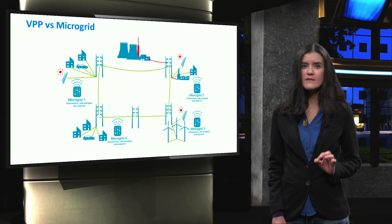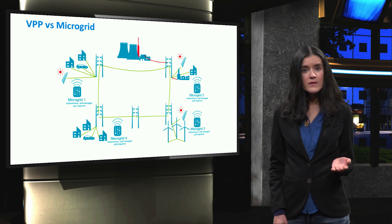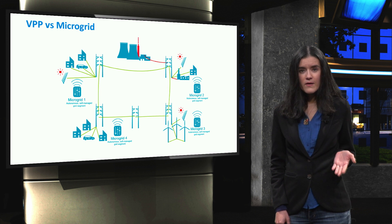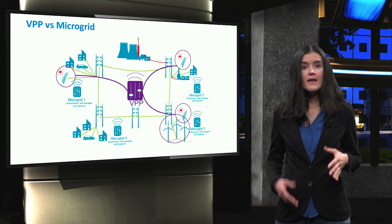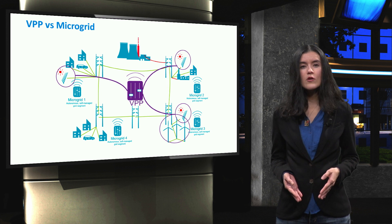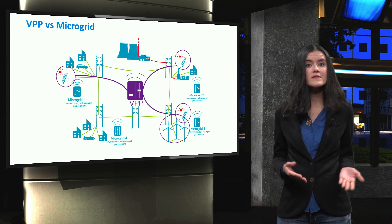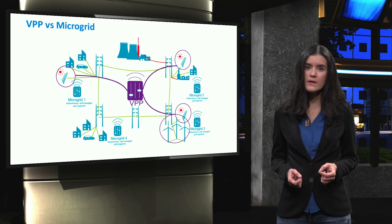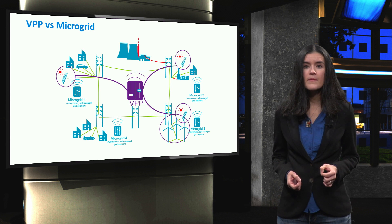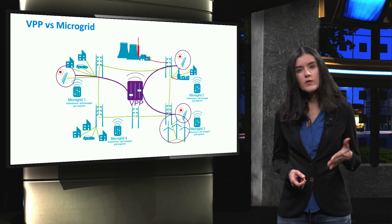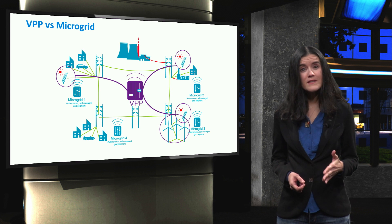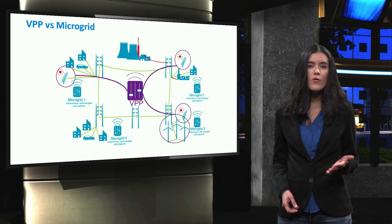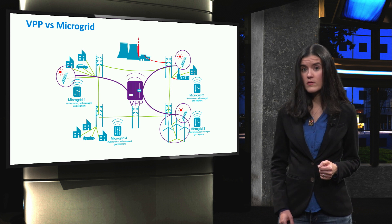But what are the most important differences between microgrids and virtual power plants? First of all, a key factor is locality. In a microgrid, energy resources are located within the same local distribution network and they aim to satisfy primarily the local demand. In a VPP, distributed generators are not necessarily placed in the same local network and they are coordinated over a wider geographical area.